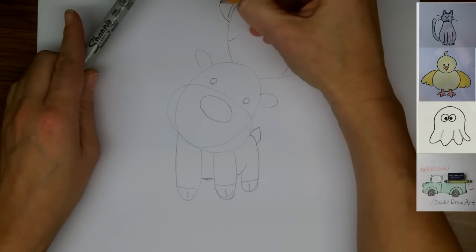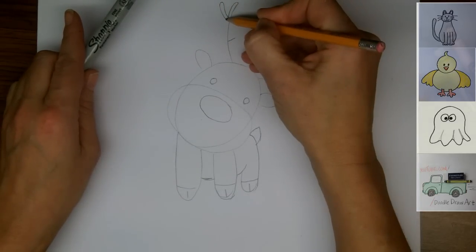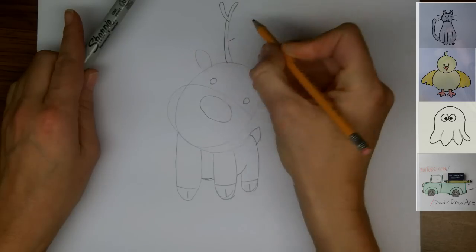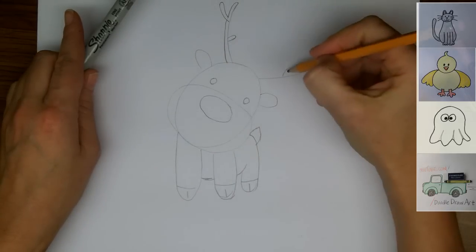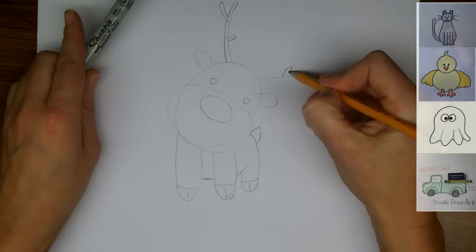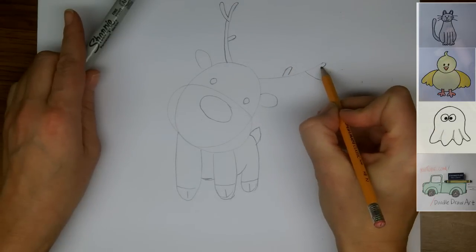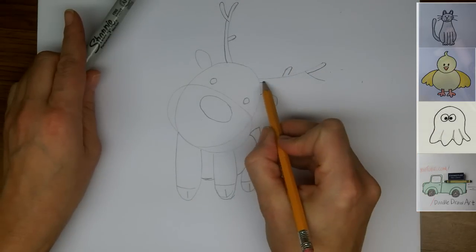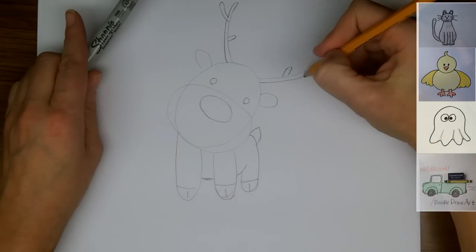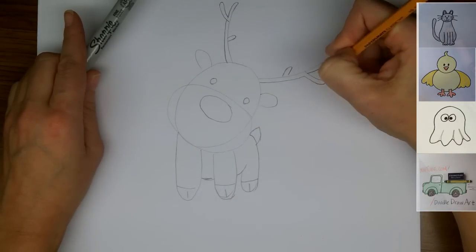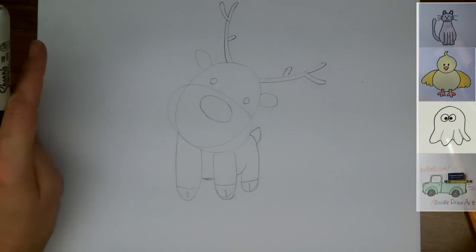Just go over the lines for his antlers by tracing just beside them to make it thicker, so that we'll have something to color in when we get up there. So just trace along parallel to the lines you drew already and curve them at the ends. All right.